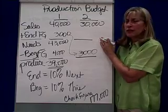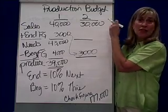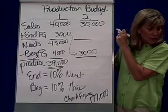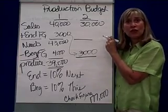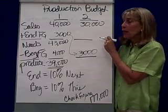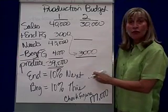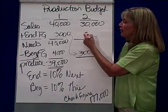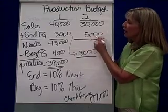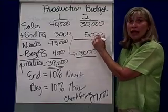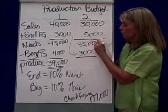For ending finished goods in Q2, I have to look at the third quarter's sales. In the third quarter, we're going to sell 50,000 units. So 10% of 50,000 is 5,000 bottles of water. So in the second quarter, I have needs for 35,000 bottles of water.